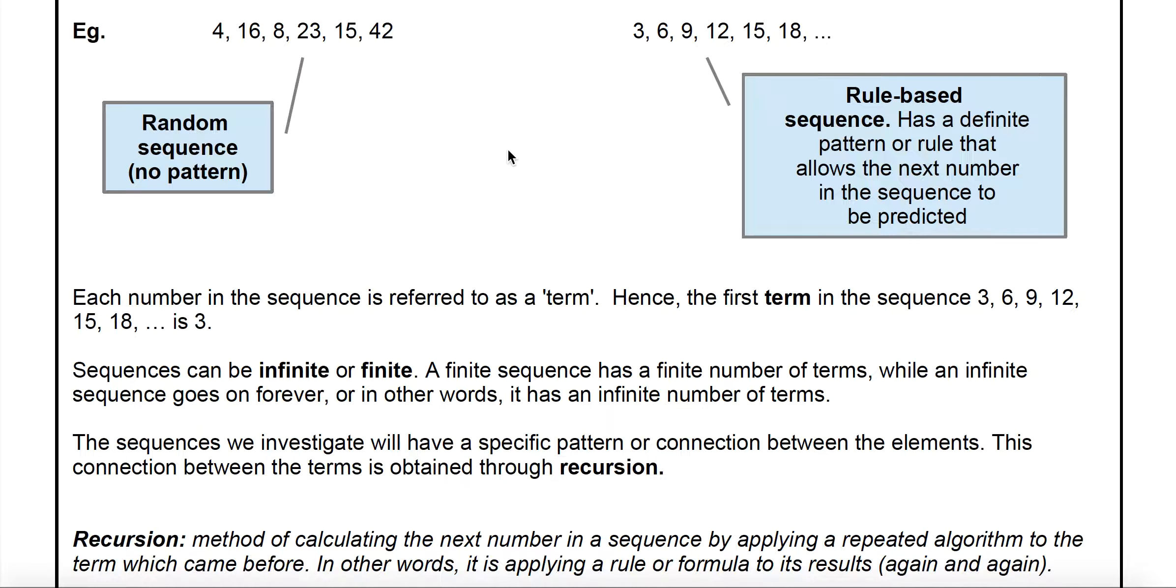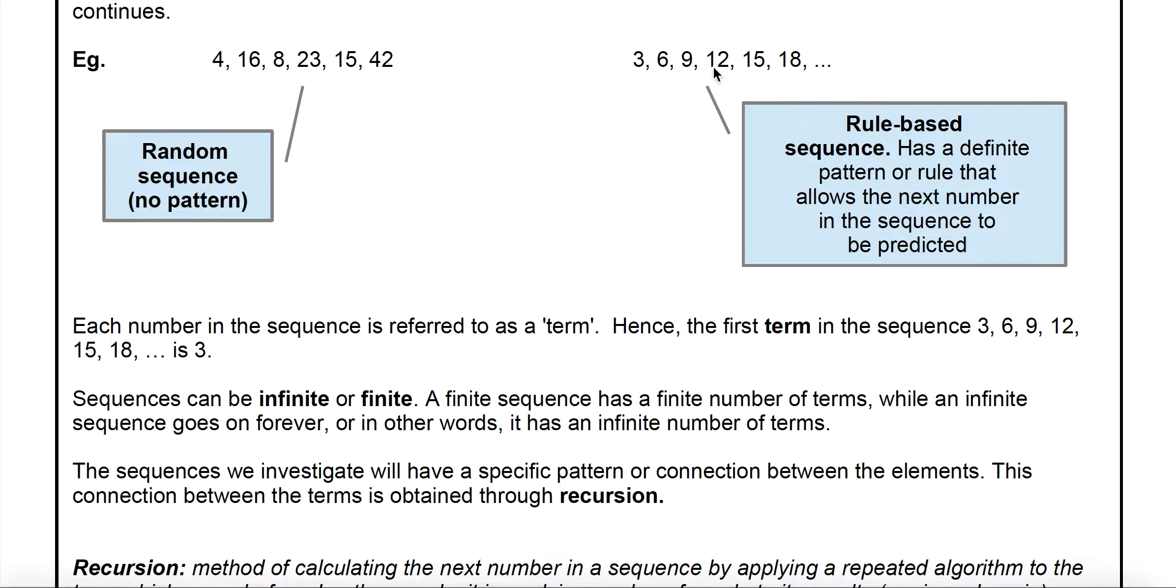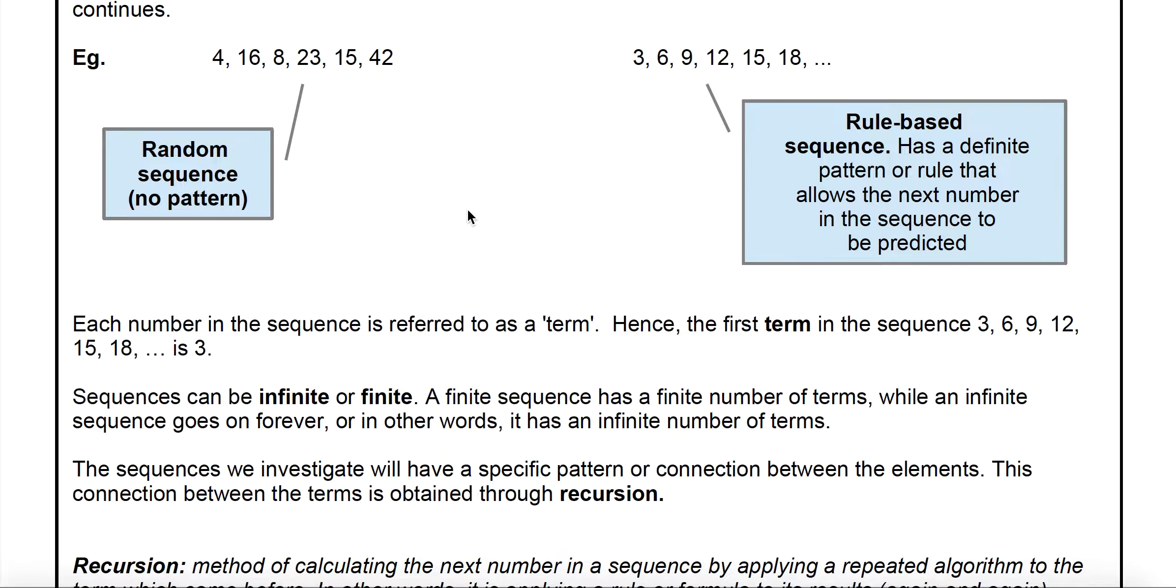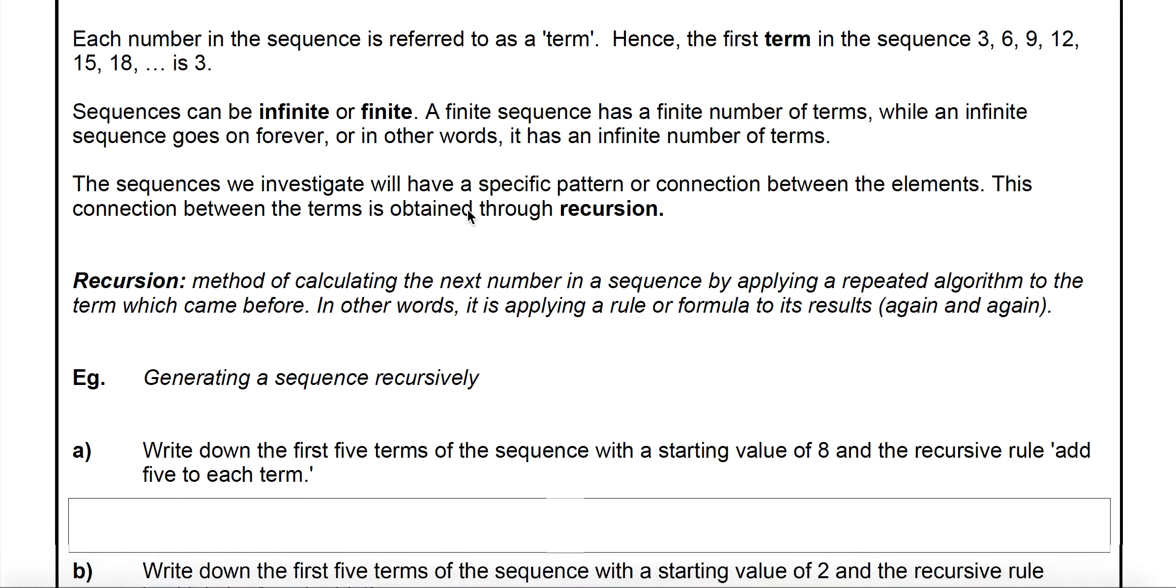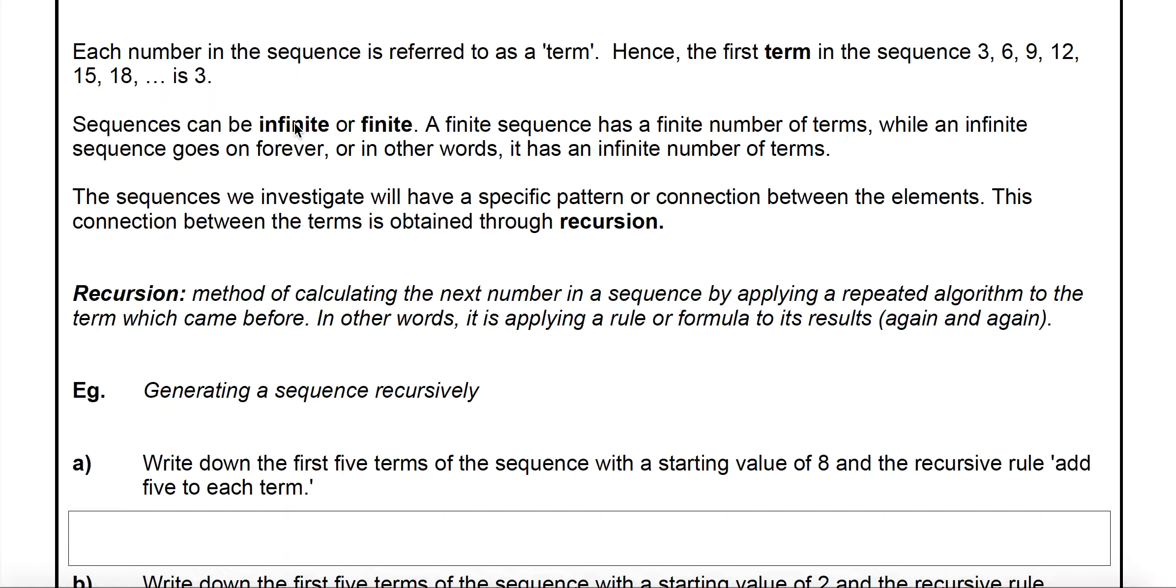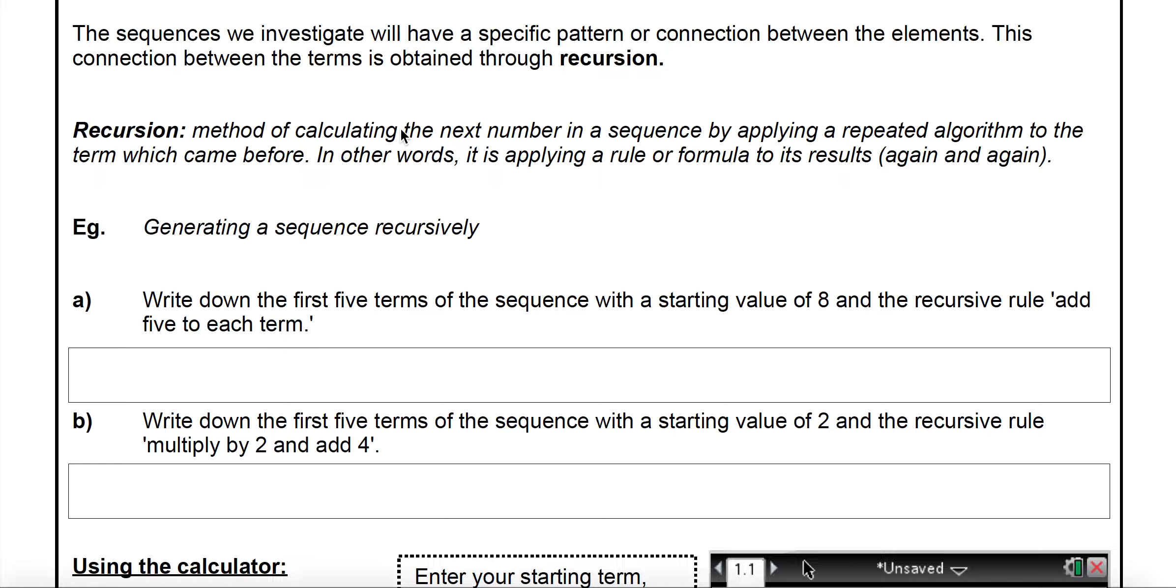In the sequence, every single number we refer to as a term. So the first term in this sequence is number three. The fourth term is over here. They can go on indefinitely or infinitely. For example, if we're talking about interest, while your investment is in the bank it could continue indefinitely, whereas some sequences might be finite, meaning that it would end.